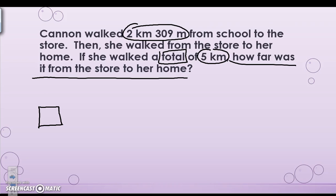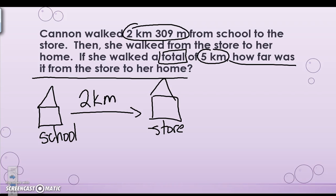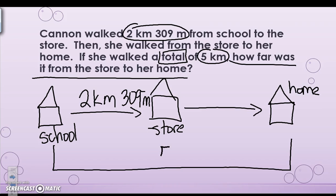So from the school to the store, I know that is 2 kilometers 309 meters. But then she walked a total, so the whole thing is 5 kilometers. My missing value is from store to home. So I know if I have a missing value but I already have the total, I'm going to need to subtract here.